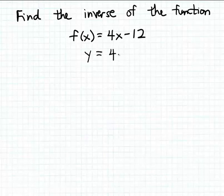I'm going to rewrite the formula for the function slightly. Now let's switch the input and the output quantities in this function, so I'm going to switch the input and the output variables here in this equation. So I'm going to write x = 4y - 12. Now I'm going to take this equation and solve it for the variable y.